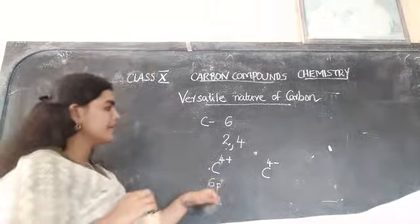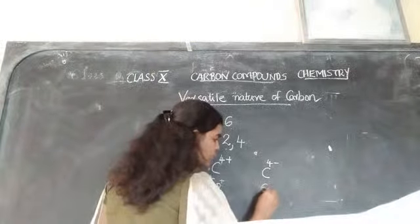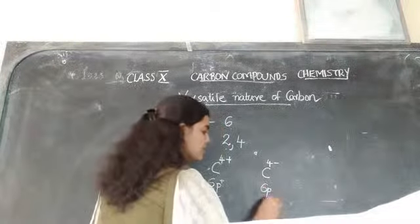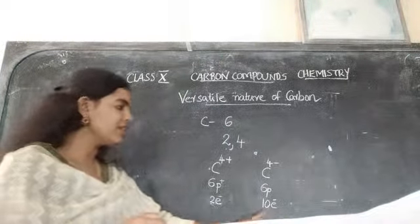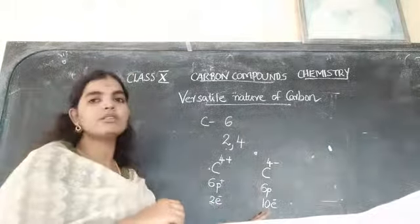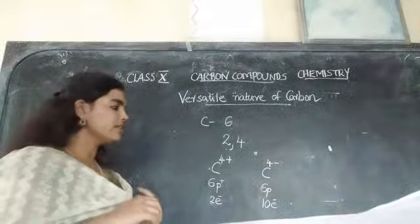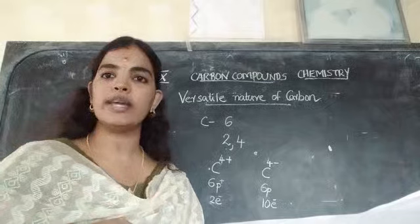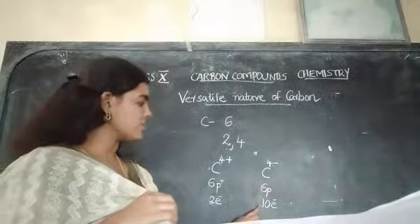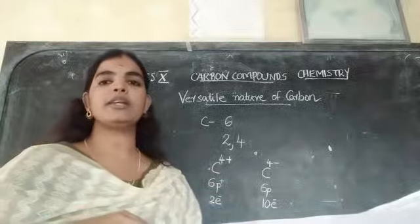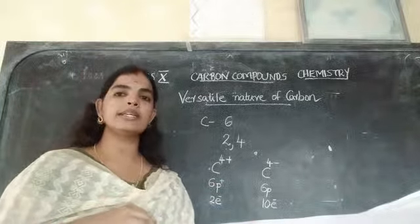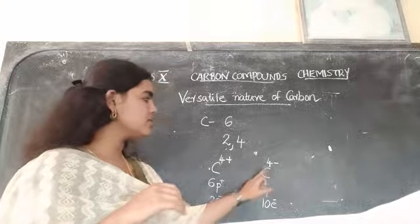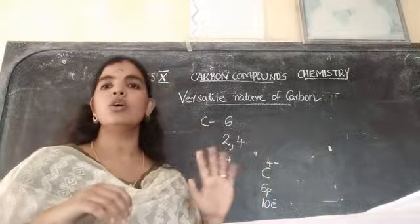Now, what about the other case — C4-? Here also there are 6 protons. It is already having 6 electrons and it gains 4 more electrons, giving 10 electrons. Since only 6 protons are there but 10 electrons, there will be repulsion between the electrons, and we call that repulsion as inter-electronic repulsion. If there is repulsion between electrons, it increases the energy, and as a result it will become unstable. So the possibility to form a C4- ion is also not possible.